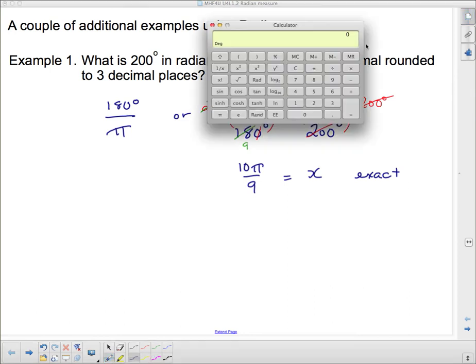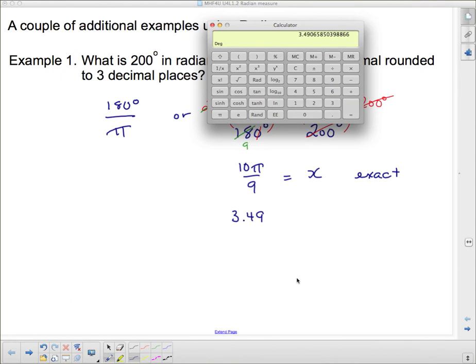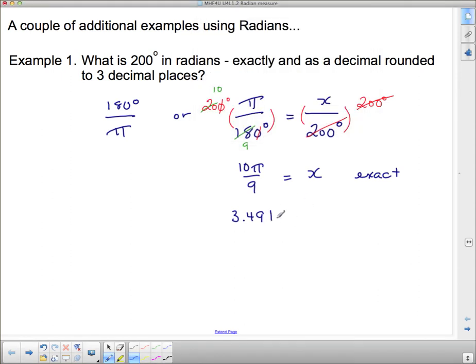So pulling out my calculator, I go 10 times pi divided by 9. And that's 3.49. So 3.49. Oh, I said three decimal places. This is 3.491 radians.